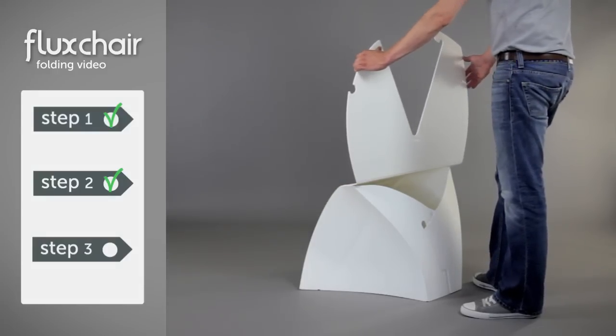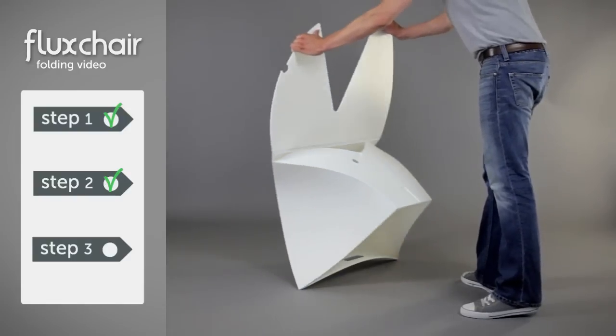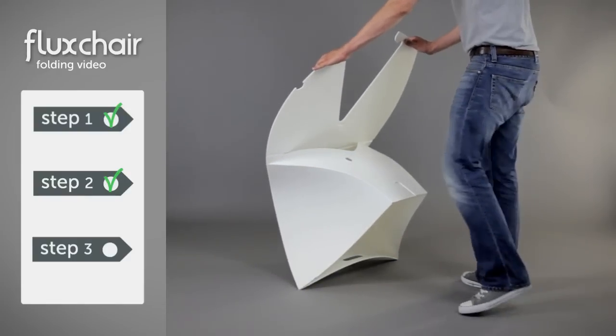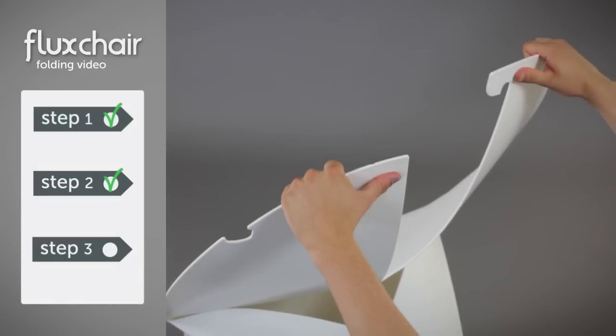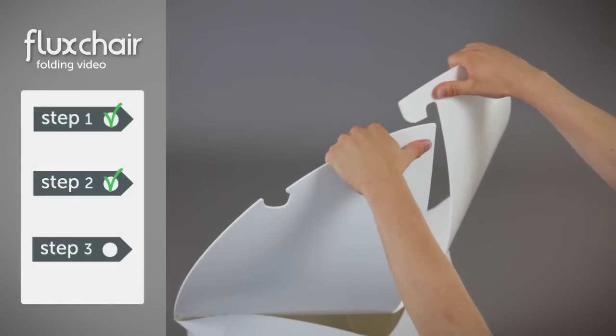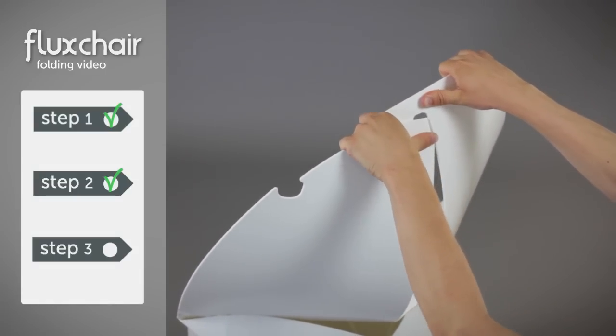Now pay attention to where Tom places his hands and tilt the chair forwards. Now here comes the tricky part. Use your thumbs to control the panels and slide the left part through the hook from the back to the front.